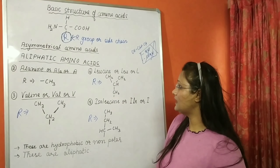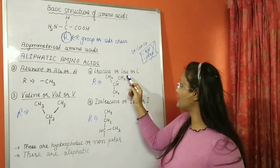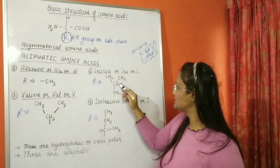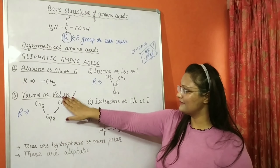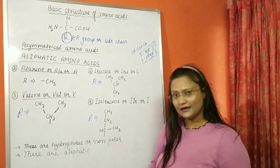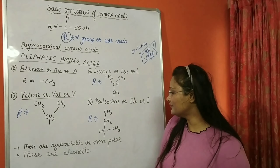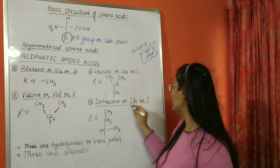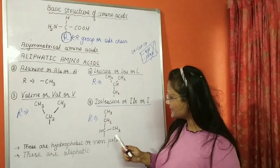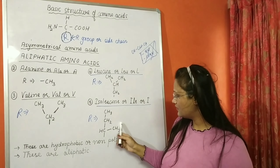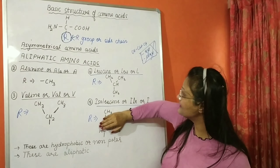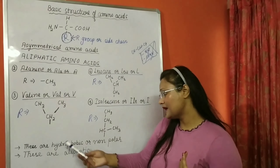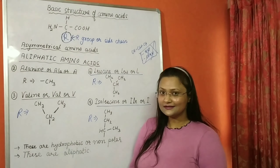Leucine, denoted as Leu or L, has an R group of CH2CH(CH3)2 — slightly bigger than valine with one additional CH2. Isoleucine, denoted as Ile or I, has the structure CH(CH3)CH2CH3. These complete the aliphatic amino acids, which are all hydrophobic or non-polar.